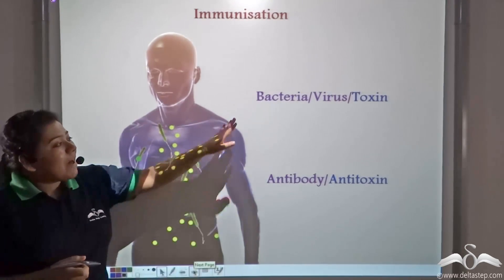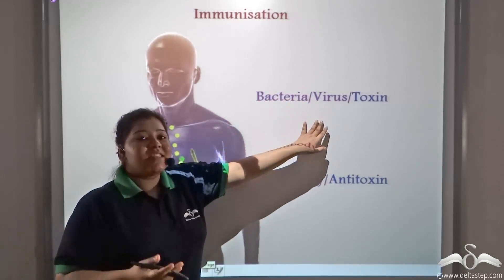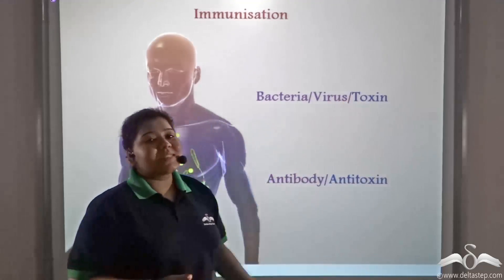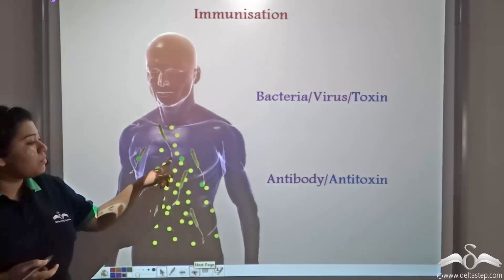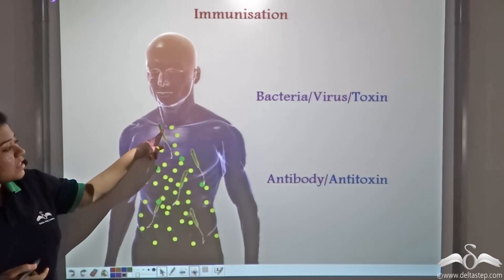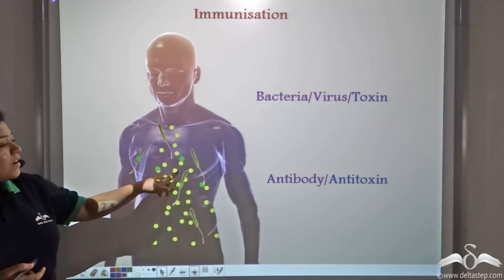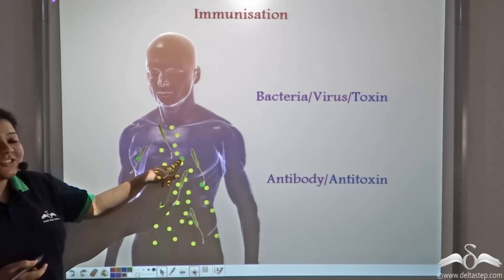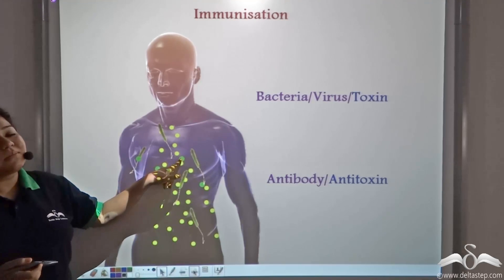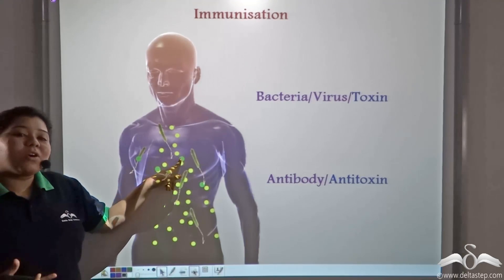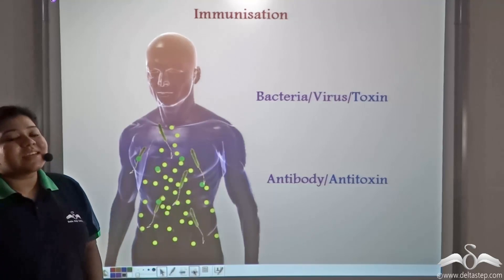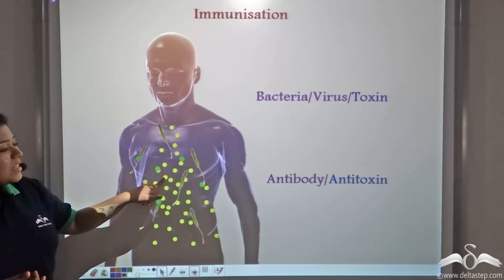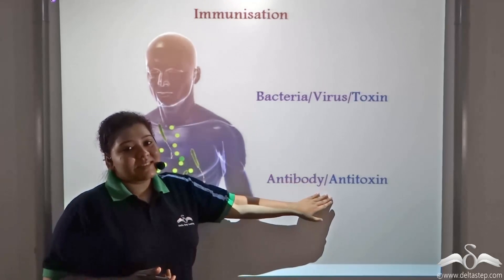So bacteria and viruses in weakened form, and bacterial toxins, are injected into our body. These are the weakened bacteria and viruses, and these are the toxins that are injected into the body, and the body develops a resistance against them by producing antibodies or anti-toxins.